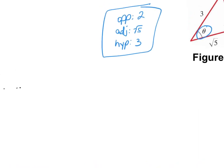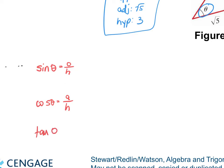When finding all 6 trig functions, write down: sine of theta is opposite over hypotenuse; cosine theta is adjacent over hypotenuse; tangent of theta is opposite over adjacent. Then account for the reciprocal functions. Reciprocal of sine is cosecant, so instead of O over H, it's H over O. Cosine's reciprocal is secant, so H over A. And cotangent is A over O.